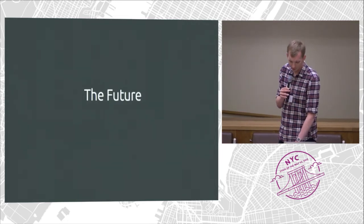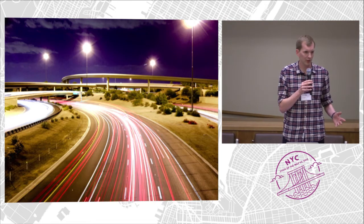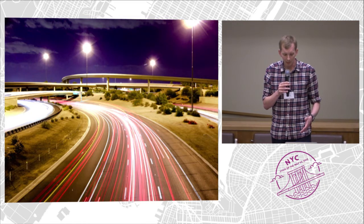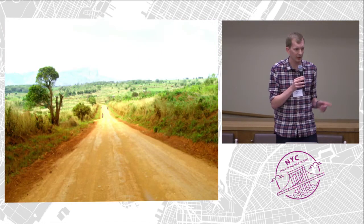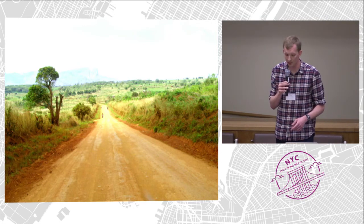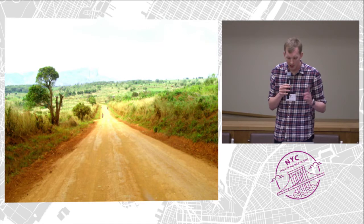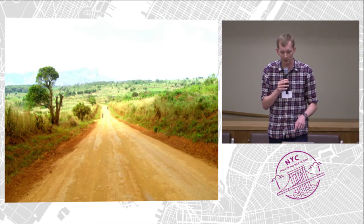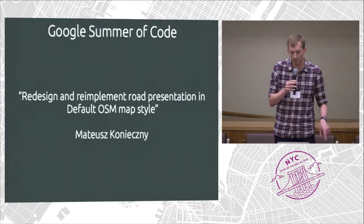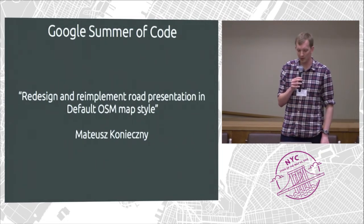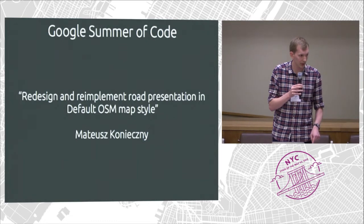Looking at the future of the OpenStreetMap Carto project — the first area is our rendering of roads. It's been more or less the same since we started, using the same colours and the same road hierarchy, which is very developed-nation-orientated in what we think a motorway or primary road looks like. That line of thinking doesn't apply everywhere in the world. One of the biggest missing features is road surfaces — it makes a big difference in most parts of the world what surface type a road is, and we show no indication of that at all. We're in a strong position because one of our maintainers is a Google Summer of Code candidate this summer, right now working on redesigning and re-implementing road presentation in the default map style, and we're going to vastly improve how we draw roads.